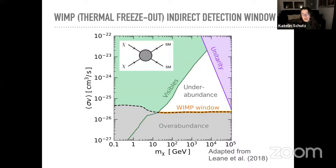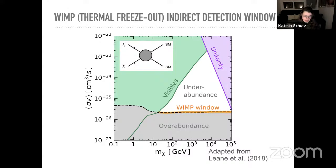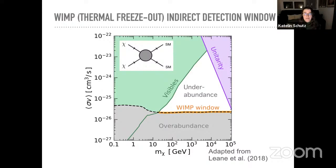There are also CMB probes: if dark matter is annihilating to standard model particles in the early universe, you're injecting energy that can mess up recombination in an observable way. At the high-mass end there's the unitarity bound — you can't perturbatively achieve the correct relic abundance if the mass is too high, because of how the cross section scales with mass.